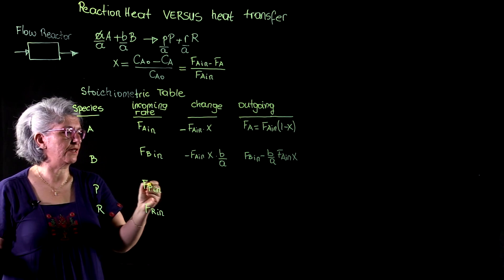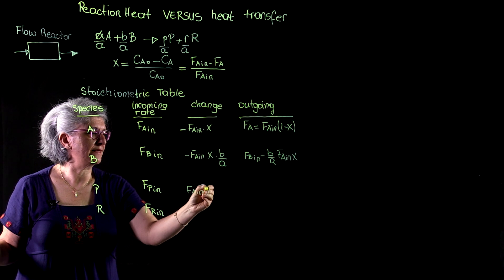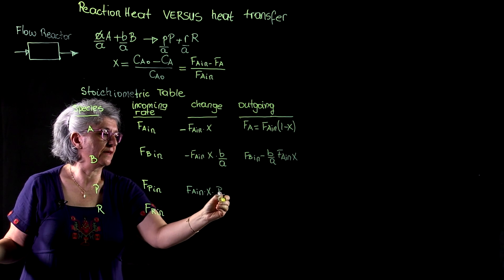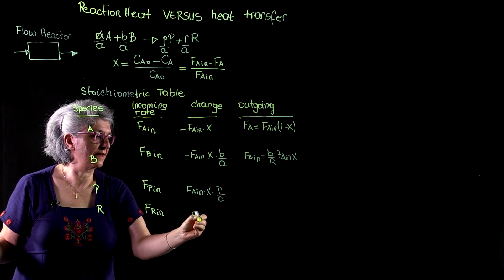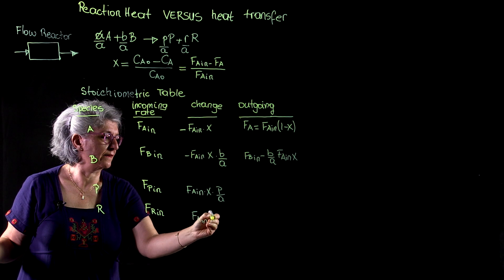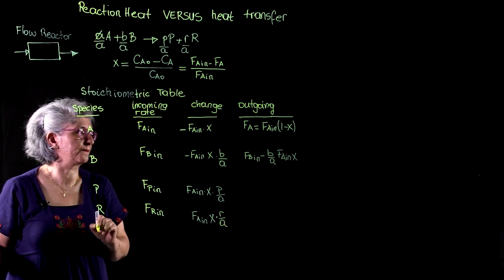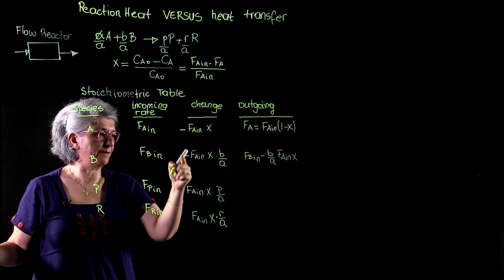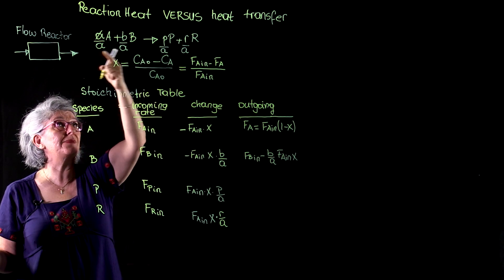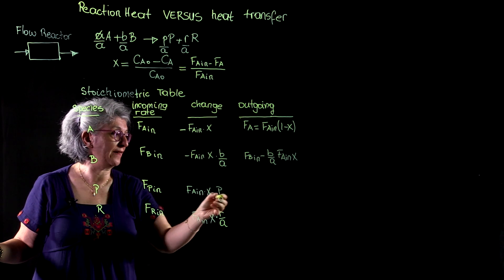With the same logic, we have FA in times X times this time P over A. Remember, just notice that I didn't put minus sign because these are being consumed, they're depleted, and these are being produced so they don't have to have a minus sign.